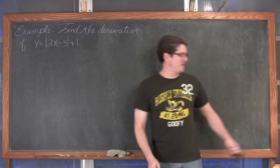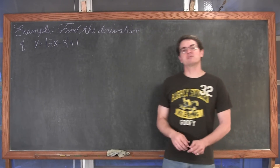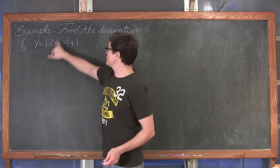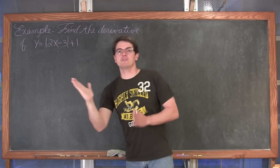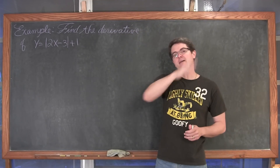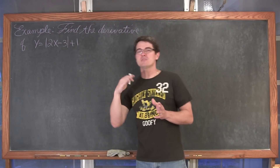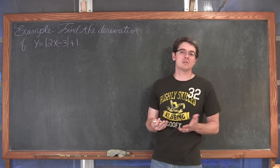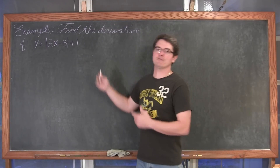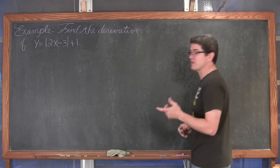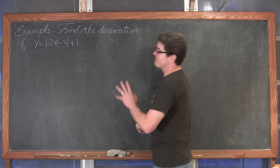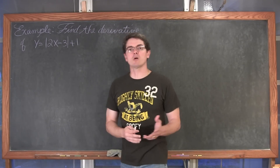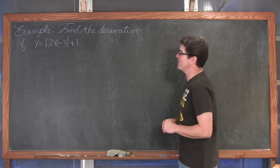Find the derivative of y equals the absolute value of 2x minus 3, plus 1. Inside this absolute value function we have a linear function, so to the left and right of the sharp bend we are just going to have straight lines. If I know the derivative just to the left and right of the sharp bend, I know the slope. But I want to find the derivative that describes the slope everywhere besides just to the left and right of that sharp bend.